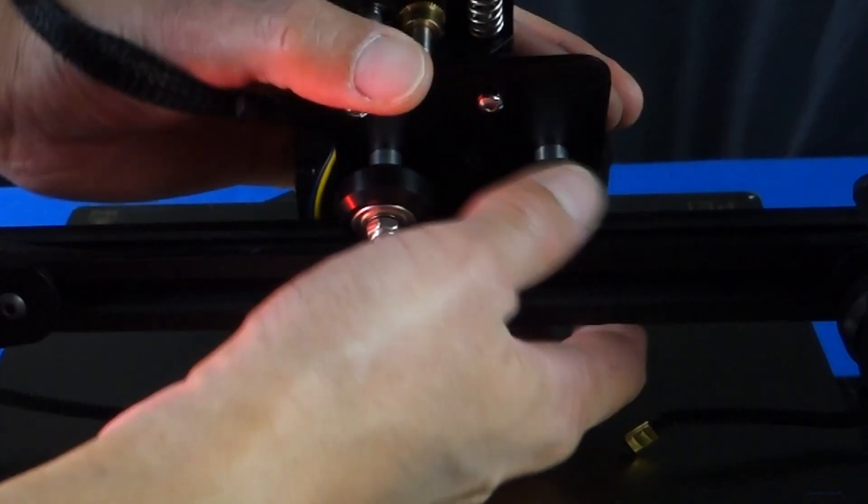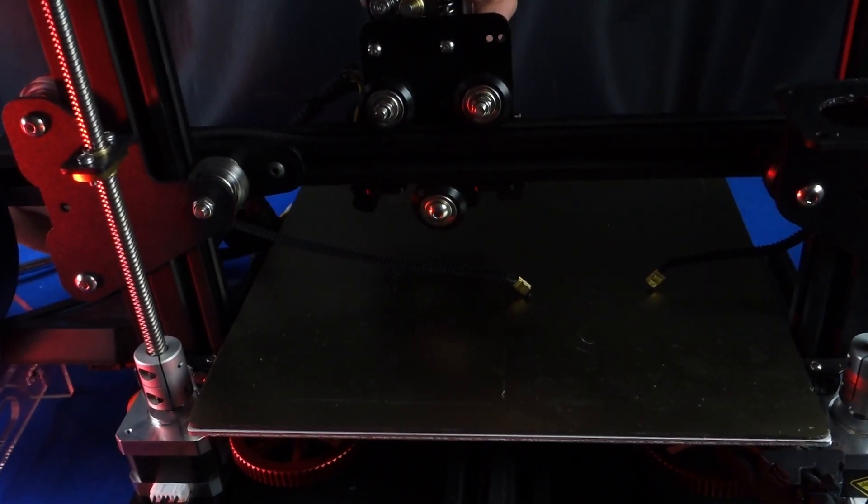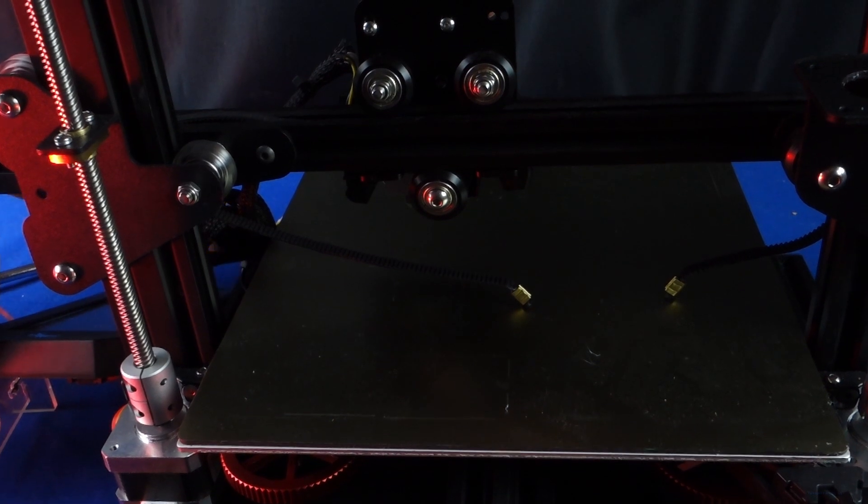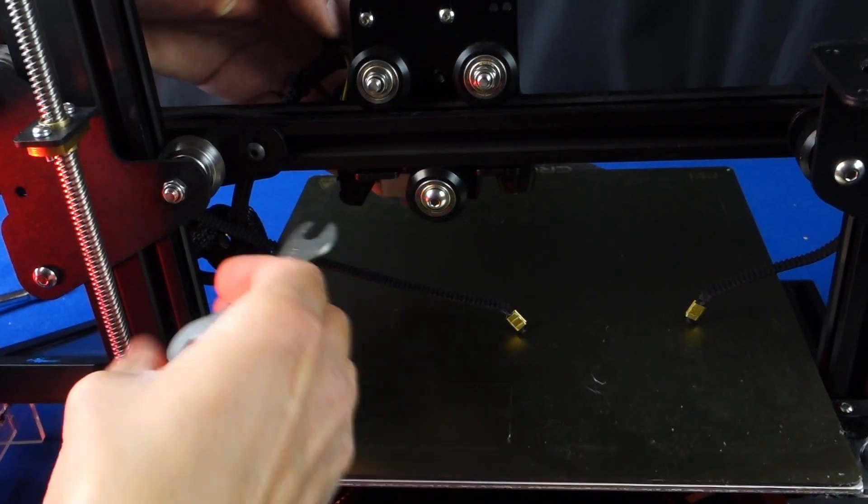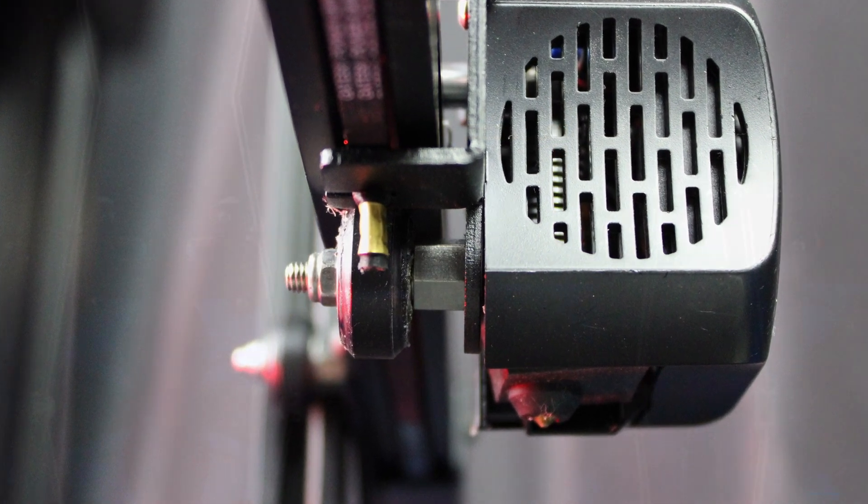For the direct extruder assembly make sure to once again loosen the bottom screw and raise the z-axis so you have enough space to work. Check to make sure that the hotend assembly is secured but moves freely before moving on to the next step. In certain cases you may have to adjust the eccentric nut if it's not stable.